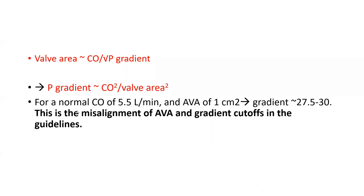The first consequence: with a normal cardiac output of 5.5 L/min and an aortic valve area of 1.0 cm², the gradient comes out around 27.5–30 mmHg. This inherently explains the misalignment in guidelines: guidelines say severe AS when aortic valve area ≤1 cm² and gradient >40 mmHg — but an area of 1 corresponds closer to a gradient of ~30, not 40.